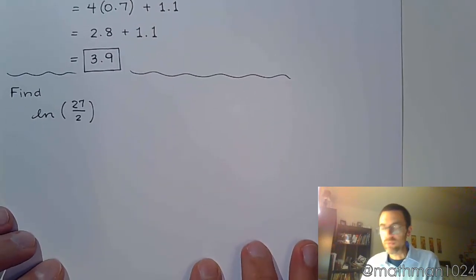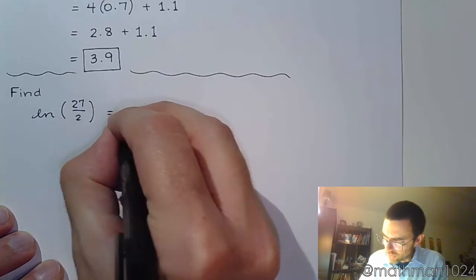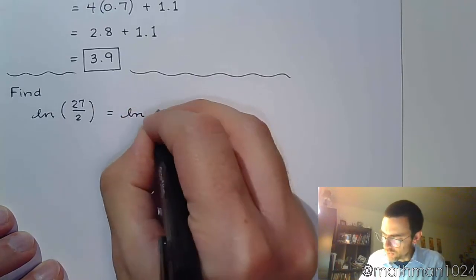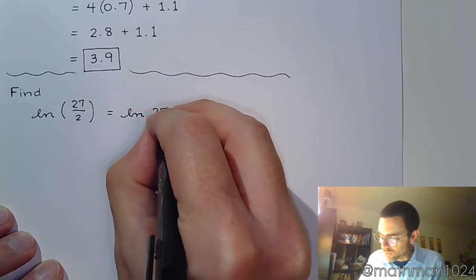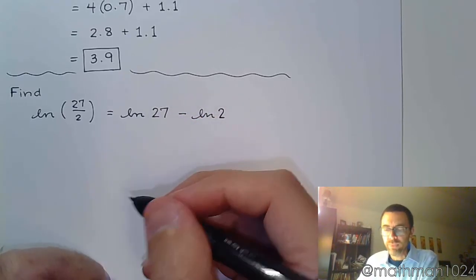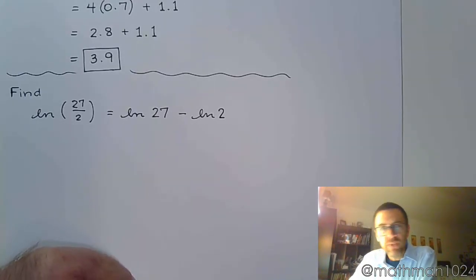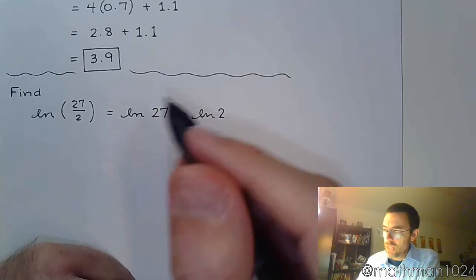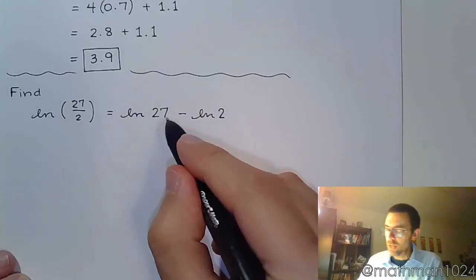Well, with 27 over 2, we have a fraction, so we know this at the very least. Using properties of logarithms, we can say this is the natural log of 27 minus the natural log of 2. Now, in order for us to use the given information at the top of this page, we have to be able to completely rewrite everything in terms of factors of 2 and 3. And when this guy is done, what about 27?